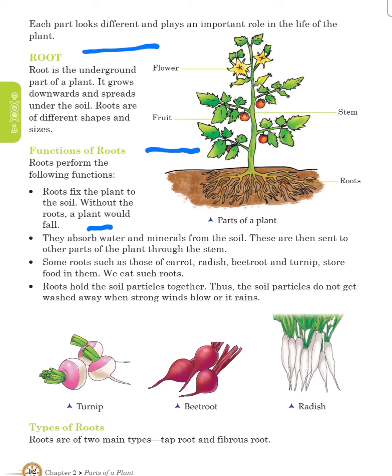Water and minerals are then sent to other parts of the plant through the stem. Some roots such as those of carrots, radish, beetroot and turnip store food in them. We eat such roots. Roots also hold the soil particles together. Thus, the soil particles do not get washed away when strong winds blow or it rains.